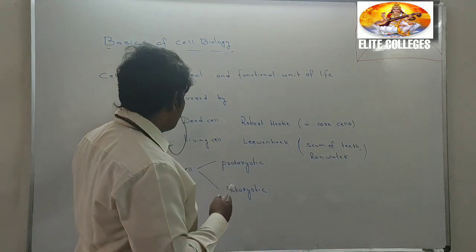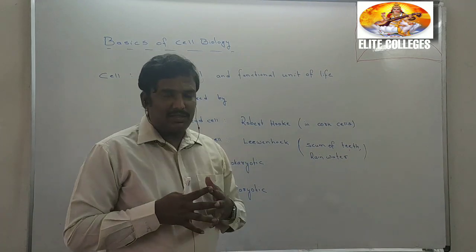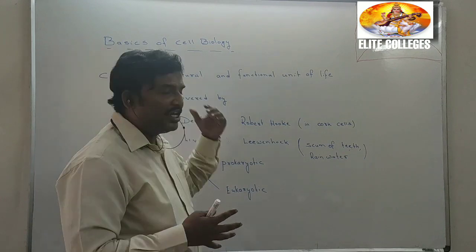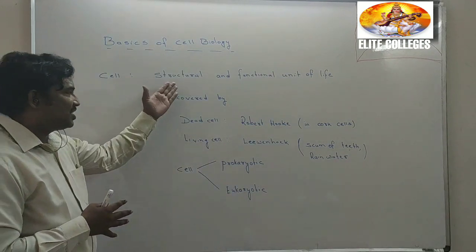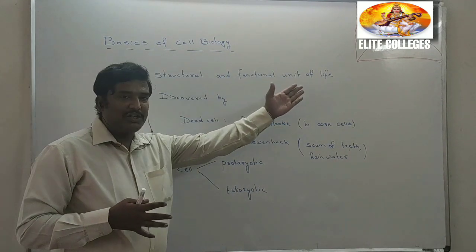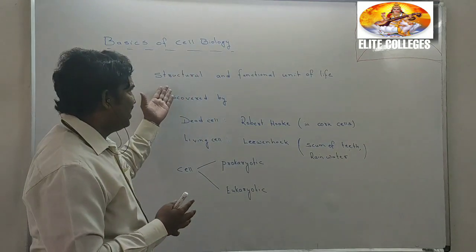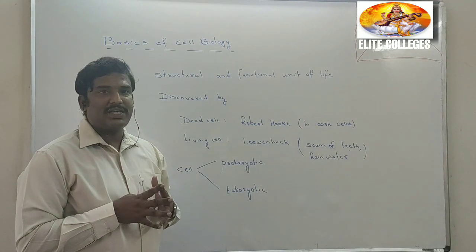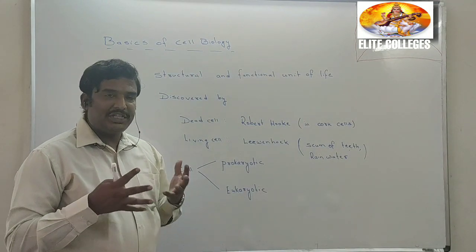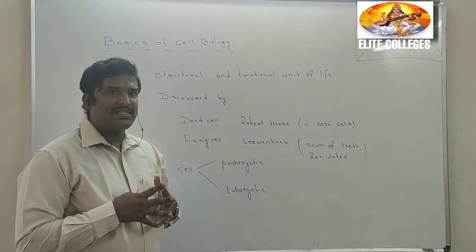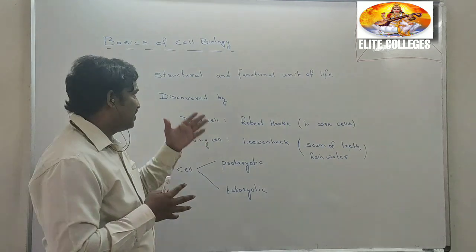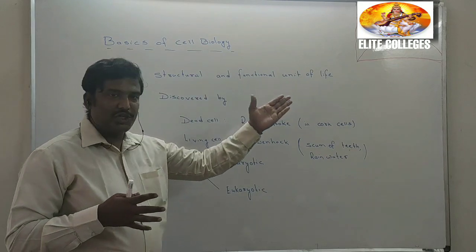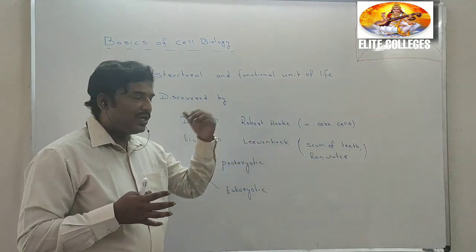You might have already studied this in lower classes. So what is a cell? The definition of a cell is that it is the structural and functional unit of life. Several functions take place within the cell and every cell has its own structure, that is why it is defined as the structural and functional unit of life.